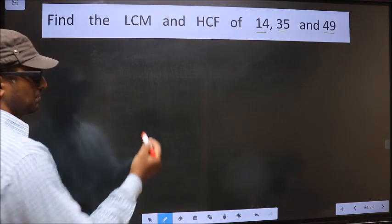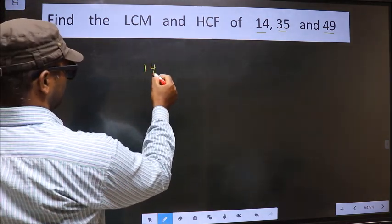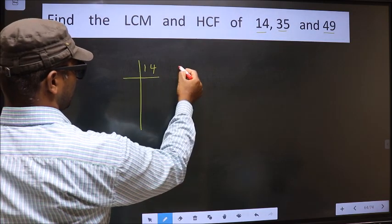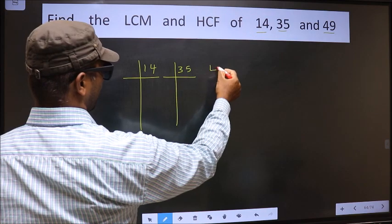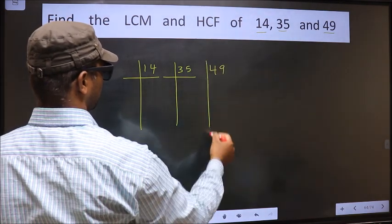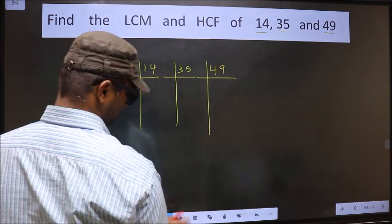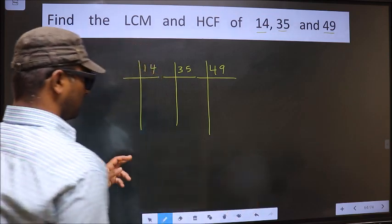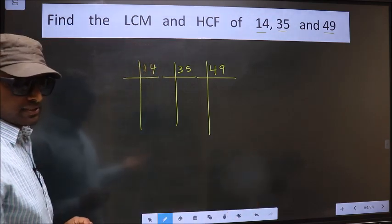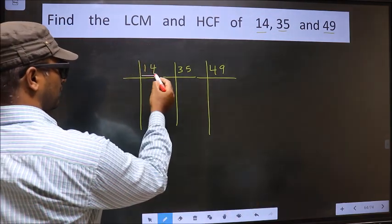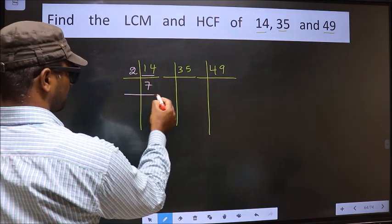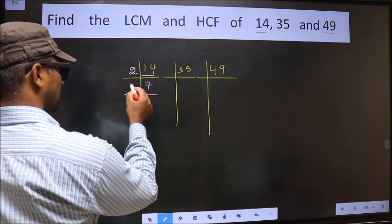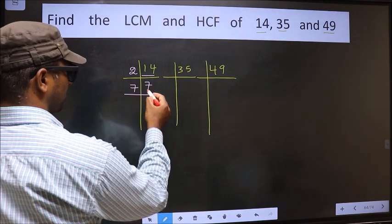That is 14, 35, and 49. Here we have 14. 14 is 2 times 7. Now we have 7. 7 is a prime number, so 7 times 1 is 7.